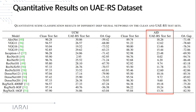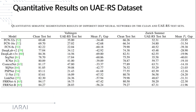Finally, we test the performance of existing state-of-the-art networks on the UAERS dataset. This is the quantitative result for scene classification. We can find that this dataset is very challenging, especially on the AID samples, and most networks can only obtain an overall accuracy of less than 20%. Similar phenomena can be observed for semantic segmentation tasks.